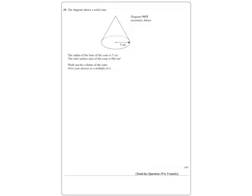Right, we've got a question here about a cone. It says that the radius to the base of the cone is 5, which shows us that on there. Total surface area of the cone is 90 pi.